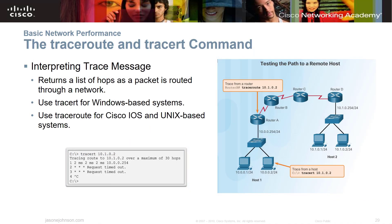When we interpret trace messages — what we call tracert — a trace returns a list of hops as a packet is routed through a network. So when we do a trace from a host to, say, 10.1.0.2, it starts going through and shows the first hop point, then the next hop point, and so forth all the way through.